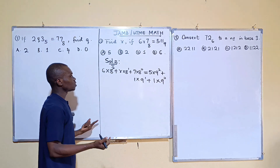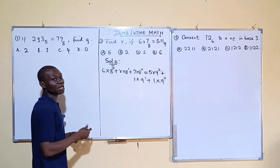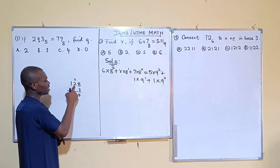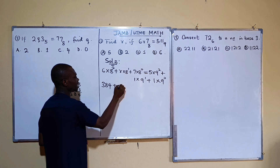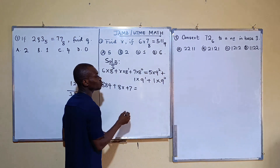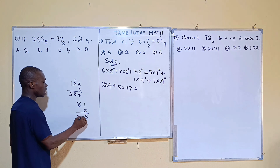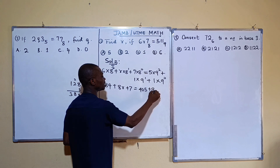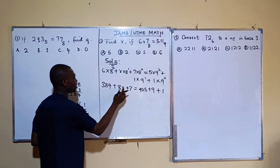Simplifying: 8 squared is 64, and 64 times 6 gives 384. Then we have 8r, and 7 times 1 is 7. On the right side, 9 squared is 81, and 81 times 5 gives 405. Then 1 times 9 is 9, and 1 times 1 is 1. So summing the right side gives us 8r on the left.